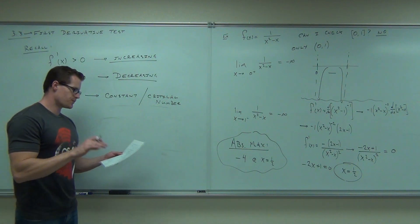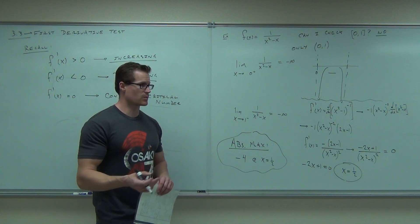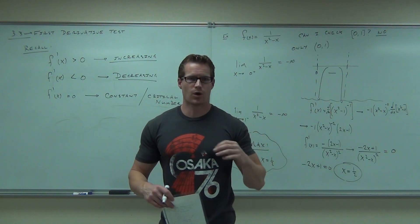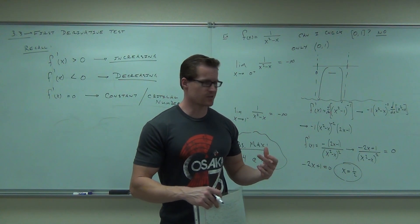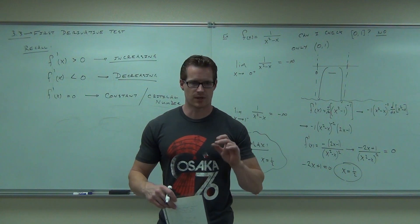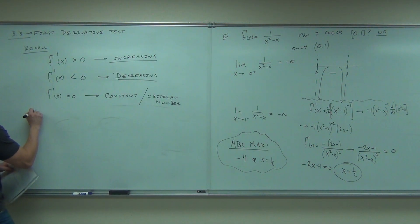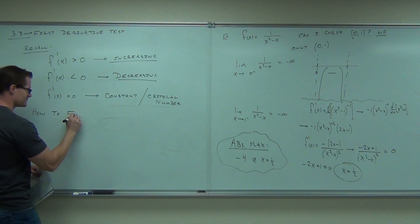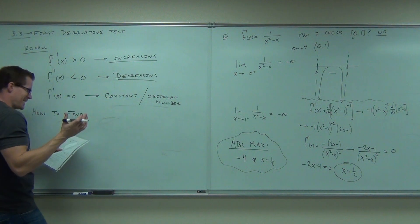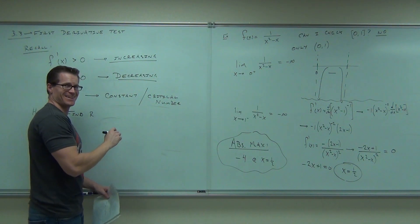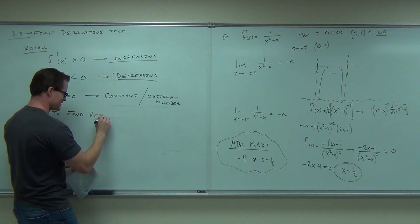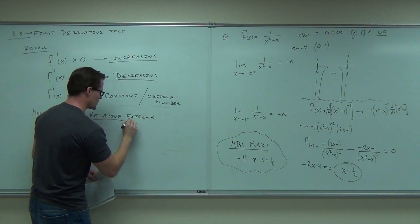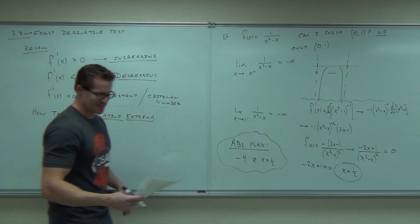Now I'm going to tell you how to find relative extrema. You think you already know because you know what critical numbers are, but I'm going to give you a nice graphic. You have all the information. I'm not going to teach you anything really new. You have it all up here, you have it on your notes. What I'm going to tell you is how to do it properly. I'm going to give you a graphic organizer so that it's a little bit easier for you. Would you like that? Here, do this on your homework. This is how I want you to do it.